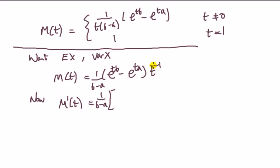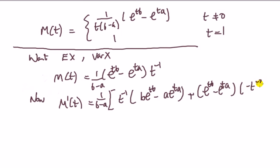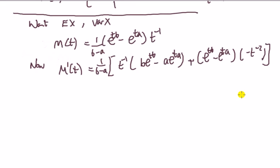It doesn't matter which way around you do it. So: write one and differentiate the other, plus write the other and differentiate the first. We write t^(-1) first and differentiate the hard part: b·e^(tb) minus a·e^(ta). Then we write the other term e^(tb) minus e^(ta) and differentiate t^(-1), giving minus t^(-2).